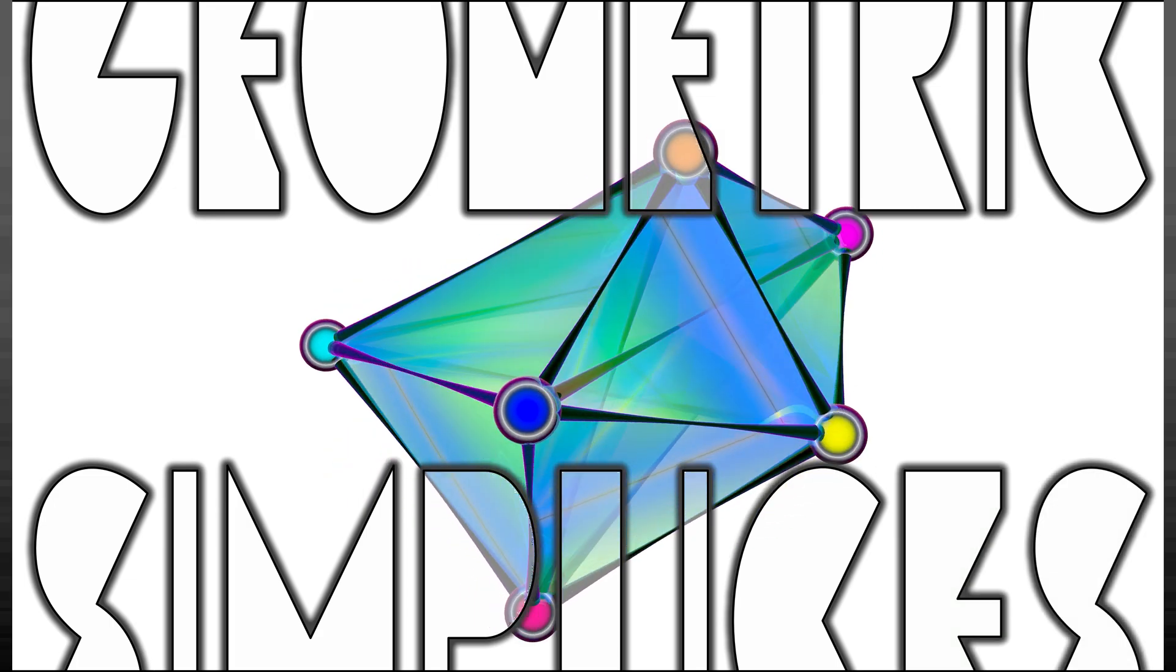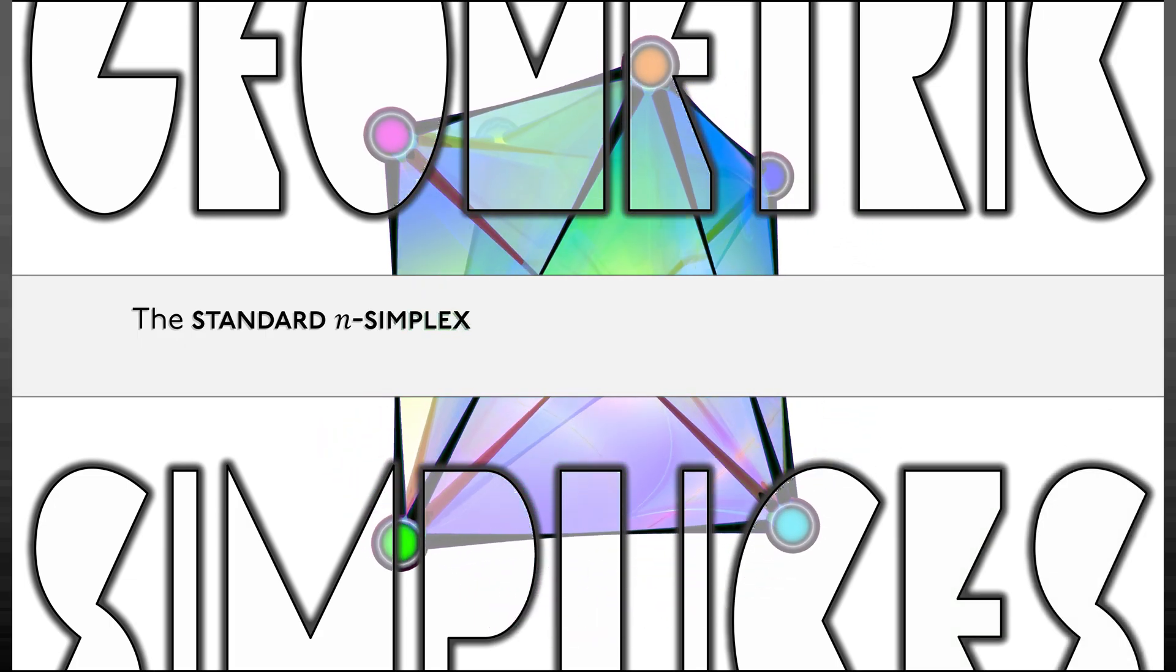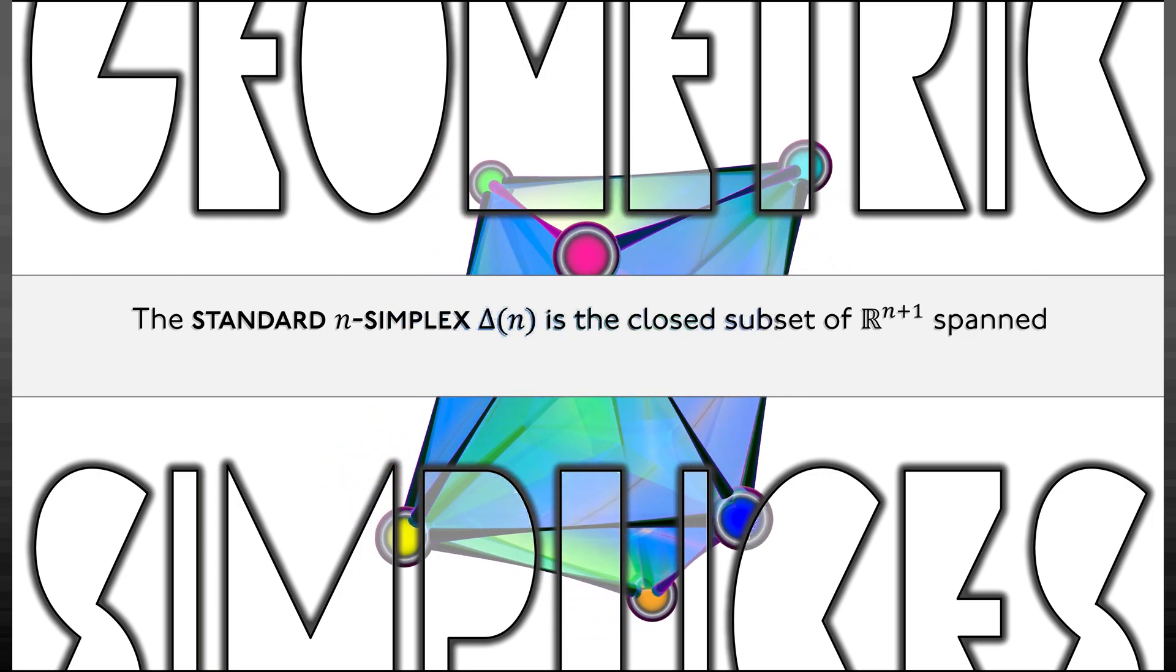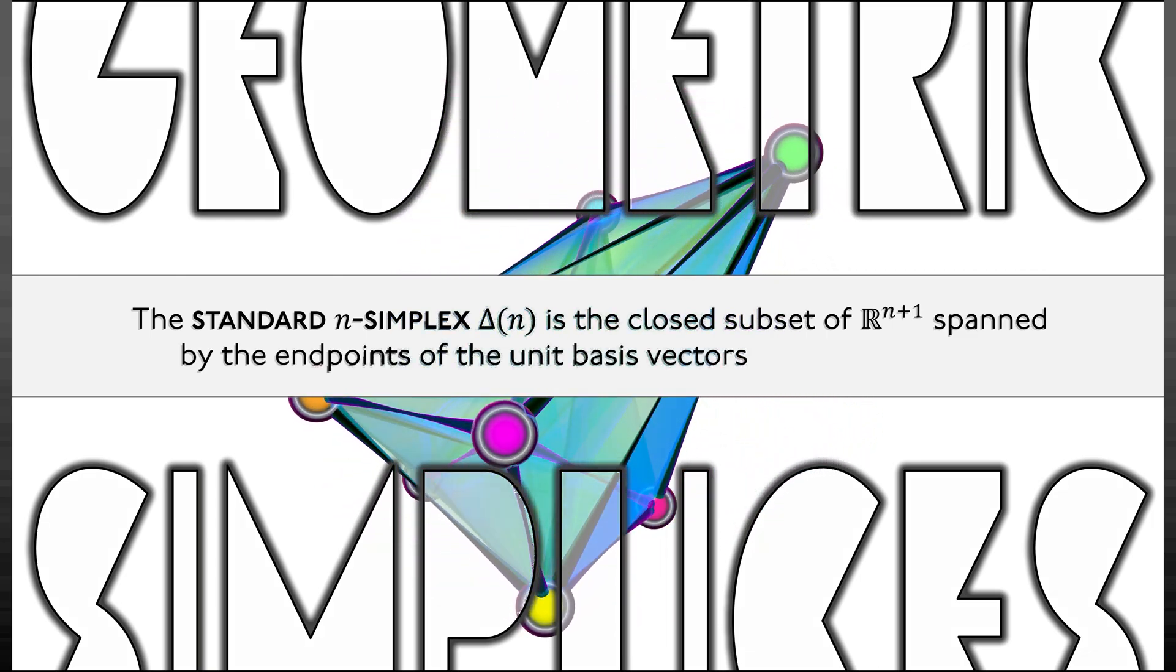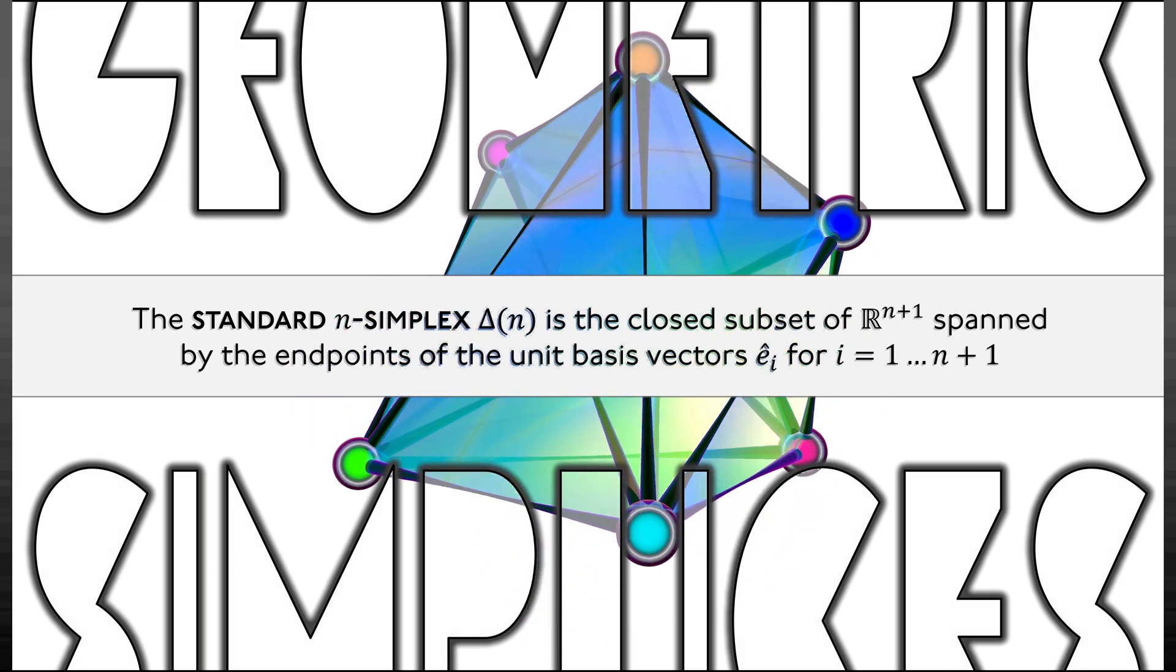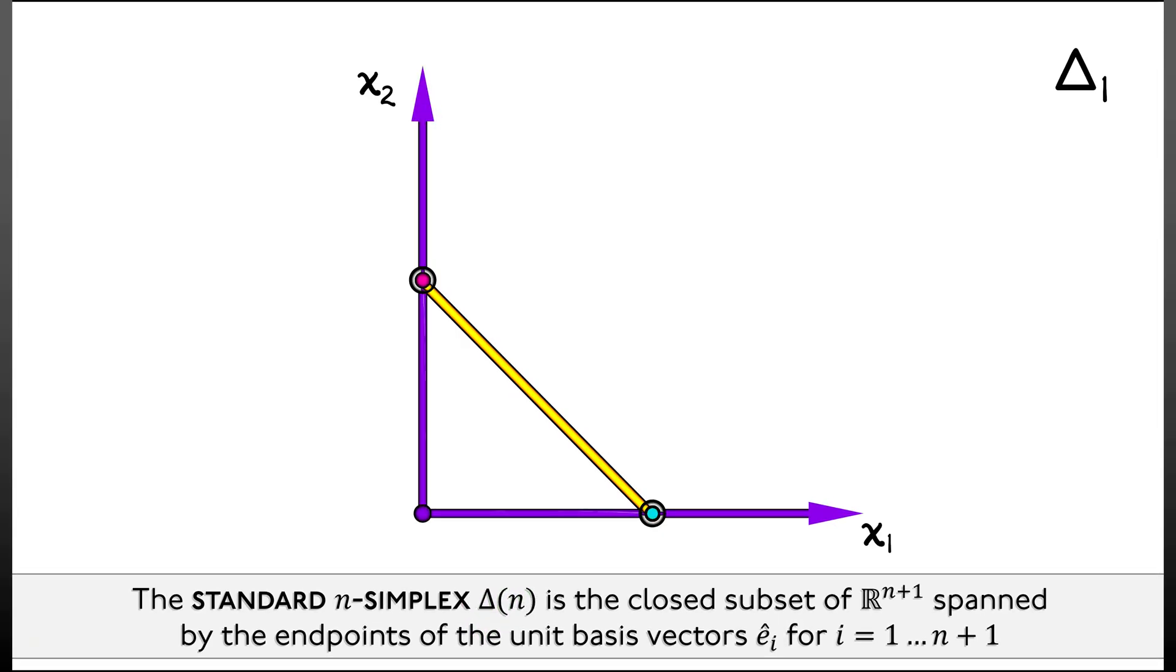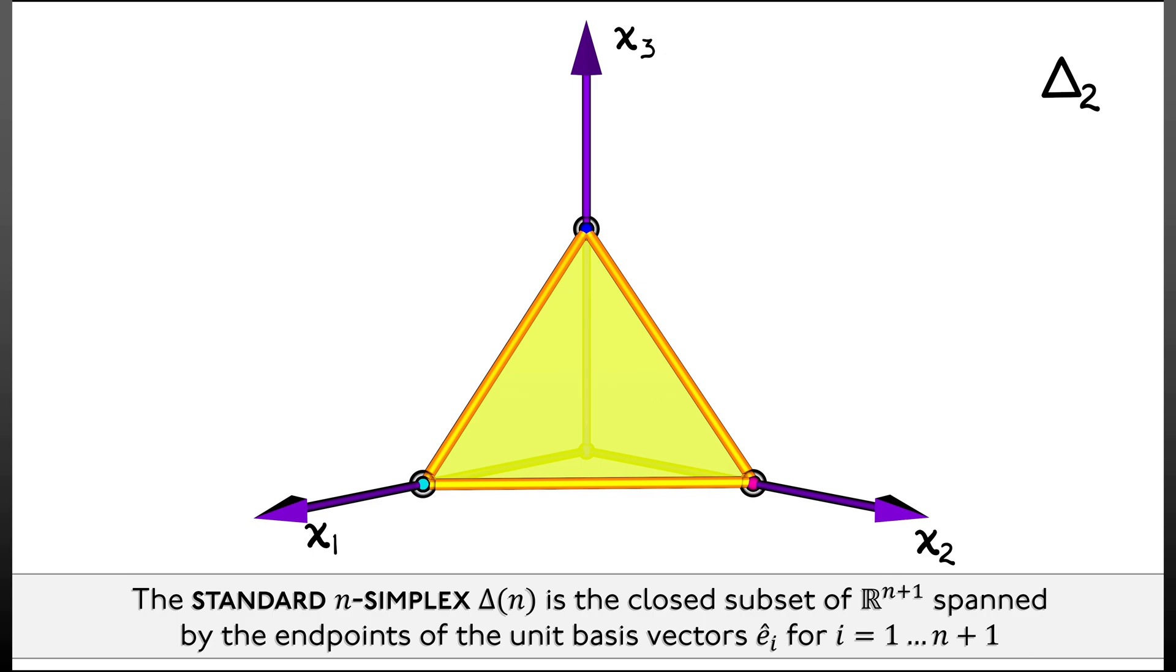In particular, we can talk about the standard n-simplex. We'll call that Δⁿ. That is going to be the closed subset of Euclidean space Rⁿ⁺¹ that is spanned by the endpoints of the unit basis vectors êᵢ as i goes from one to n plus one. For example, in the plane, we get a standard one simplex just by that little diagonal line segment thing. The standard two simplex lives naturally inside of R³ using the unit basis vectors e₁, e₂, e₃. It would keep going in higher dimensions, a little bit harder to draw accurate pictures, but you can imagine how this works.